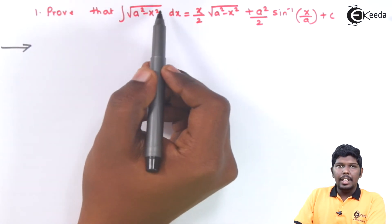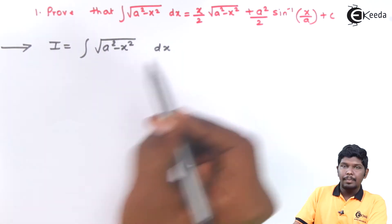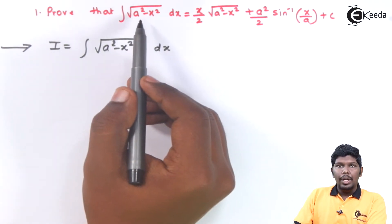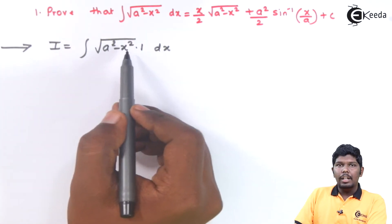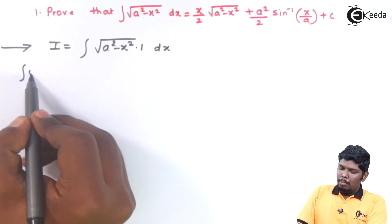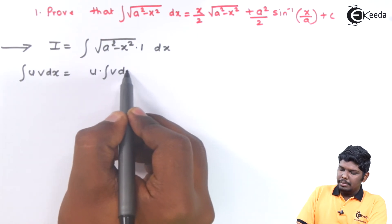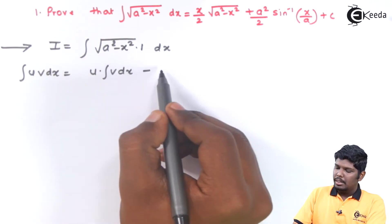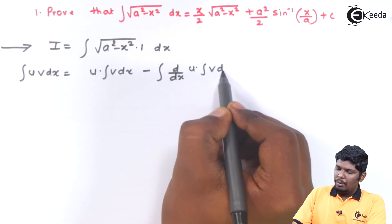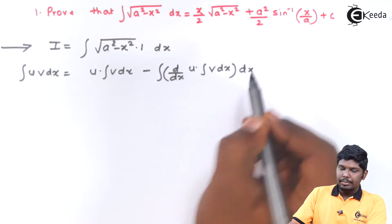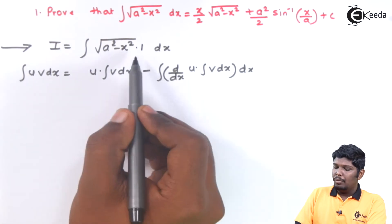Let us consider this integral as i. Now to find this integral, we need to multiply this function by 1 and solve using the UV rule. The formula is: integral of uv dx = u × integral of v dx − integral of (d/dx of u) × (integral of v dx) dx. Here, u = √(a² - x²) and v = 1.